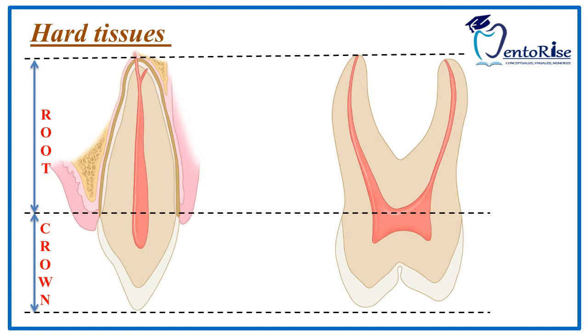The figure represents the cross section of the tooth. The tissues of the tooth are divided into two kinds: the hard tissues and the soft tissues.